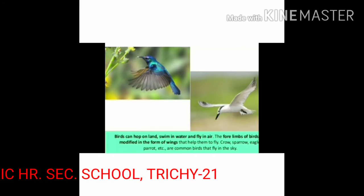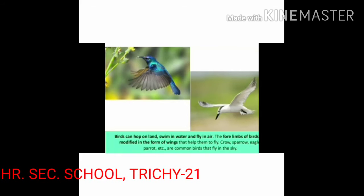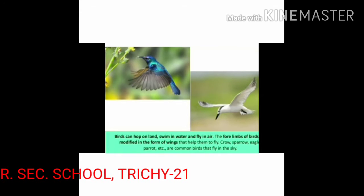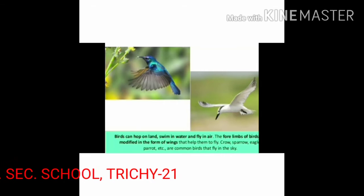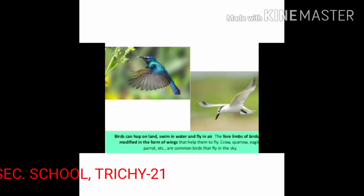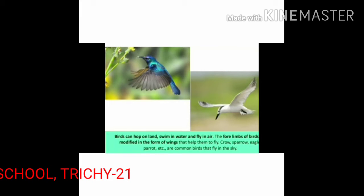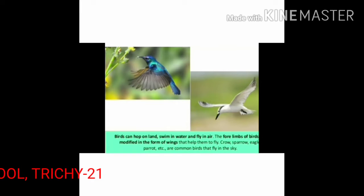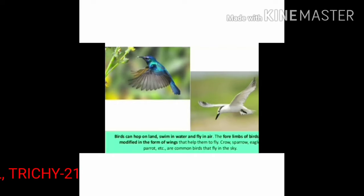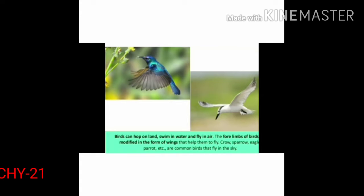Now, let us learn what are the three adaptations of birds for flying. Flying birds have large chest muscles that move the wings. Birds have feathers that help them fly. The long flight feathers on the wings and tails help birds balance and steer. In addition, birds have a system of air sacs in their body that connect to the lungs.